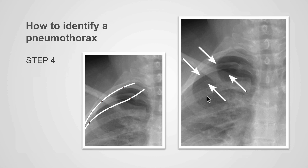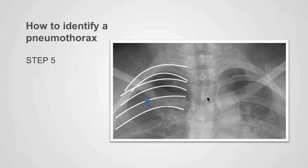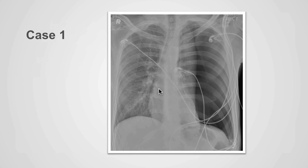If you're still having difficulties identifying the pneumothorax, then outline each of the ribs on the suspected side. This is the first rib, the second rib, the third rib — superior cortical outline, inferior cortical outline. Here is the superior cortical outline of the fourth rib and the inferior cortical outline of the fourth rib. Between the third and fourth rib, there is an additional line, and this is the edge of the pneumothorax.